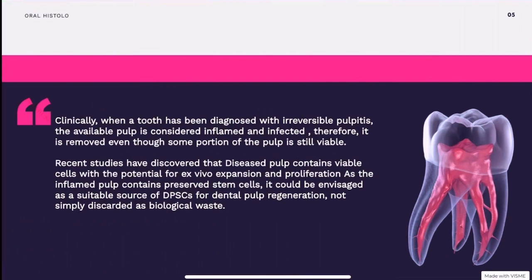Clinically, when we face a tooth diagnosed with irreversible pulpitis — which is inflammation of the dental pulp — the available pulp is considered inflamed and infected, and therefore it is removed, even though some portion of the pulp is still viable. This viable portion contains viable cells with the potential for ex vivo expansion and proliferation. So this inflamed pulp, which contains preserved stem cells, can be considered a suitable source for dental pulp derived stem cells for dental pulp regeneration — and no longer a discarded biological waste.